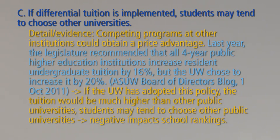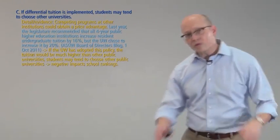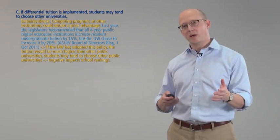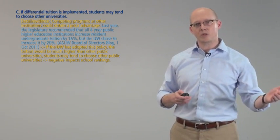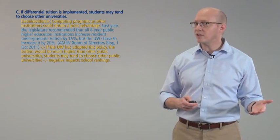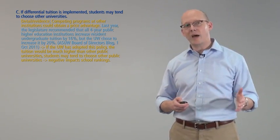That evidence only demonstrates that the U-Dub raised tuition four percentage points more than was recommended — that is all that evidence proves. It does not demonstrate that if differential tuition is implemented, students may tend to choose other universities. At some point in the drafting, that evidence was slotted in there and then forgotten about. They ended up writing a point around evidence that doesn't really do what they say it's doing. When performing the speech iteratively by standing up and talking through it, you should be listening for that relationship and making sure it's there.